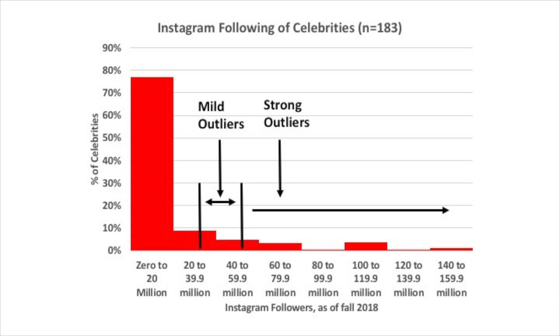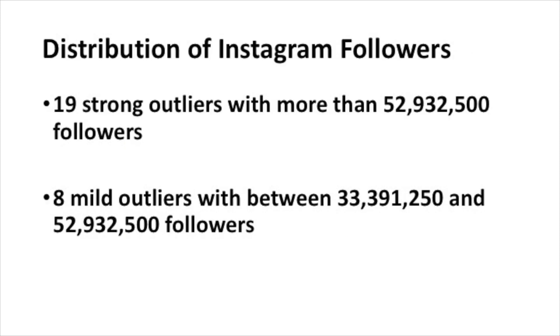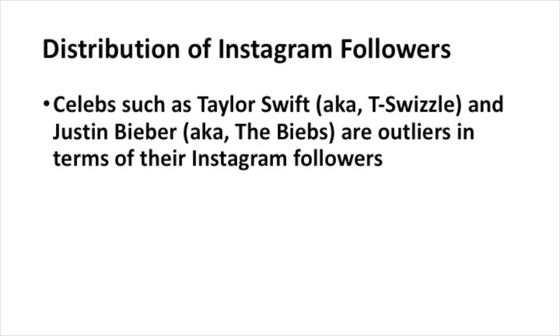Now we can go back to our histogram and show the classes that include the strong and mild outliers. The first class between zero and 20 million Instagram followers — none of them are outliers — but it includes over 70% of the distribution. Looking at the other end of the histogram, there are 19 strong outliers with more than 52.9 million followers, and there are eight mild outliers with between 33.3 million and 52.9 million followers. So overall, we've identified about 27 outliers. You might wonder who these outliers might be — celebrities such as Taylor Swift, also known as T-Swizzle, and Justin Bieber are certainly outliers in terms of their Instagram followers.